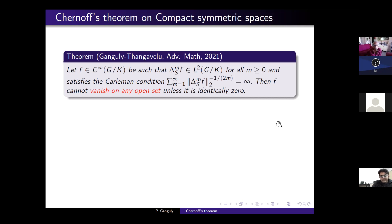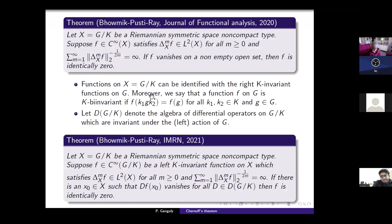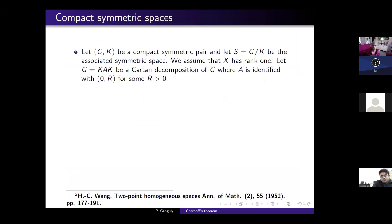Can I interrupt for a minute? In the results by Pushti, Rai, and the third author — the vanishing condition is only the function vanishing on an open set, not the function and its Laplace-Beltrami powers. Only the function. I see — then it is definitely a stronger condition. The reason I interrupted is because I misremembered the result and thought you already had a weaker condition than they do. Okay, my mistake. Carry on.